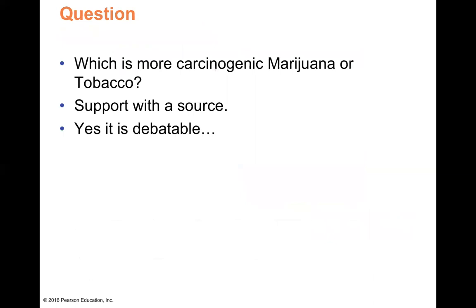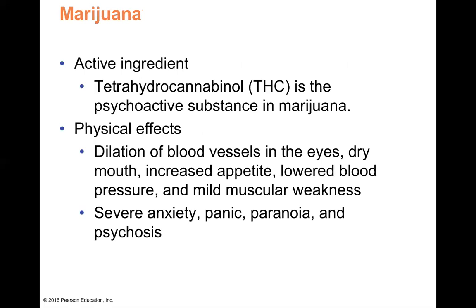Next question: what do you think is more carcinogenic — marijuana or tobacco? Both are carcinogenic. People can argue either way, but the fact is that marijuana does put carcinogens into the body and does impact the respiratory system. The active ingredient is THC, and it's a psychoactive substance — it changes the chemistry in the brain. I have a good video posted in the module that talks about how marijuana mimics cannabinoid receptors in the brain, tricking your body into thinking it's a different neurotransmitter.